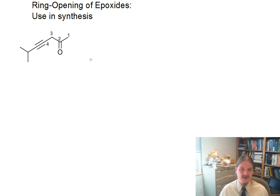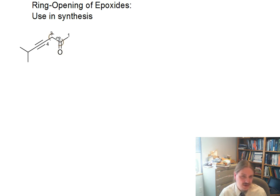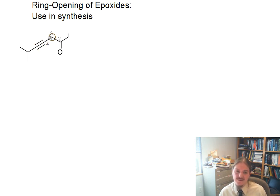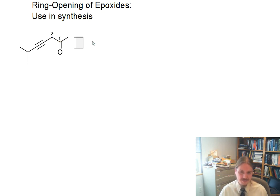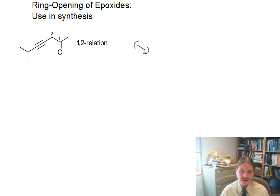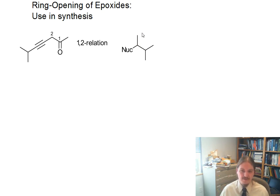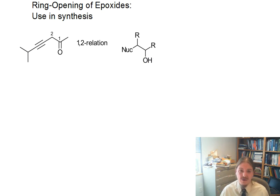I'm numbering some carbon atoms in this molecule. At carbon atom two, I have a double bond to oxygen, and then at carbon atom three, I've got an alkyne. I know that I can use terminal alkynes as nucleophiles to form new carbon-carbon bonds. What I would call a one-two relationship: I have an oxygen-containing functional group on one carbon and something that looks like it came from a nucleophile on the neighboring carbon — that could be an alcohol or something I can make from an alcohol.